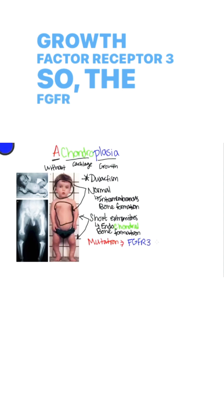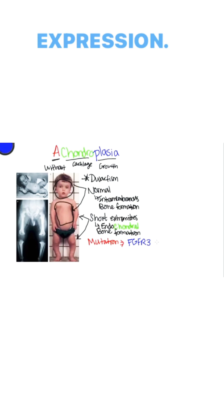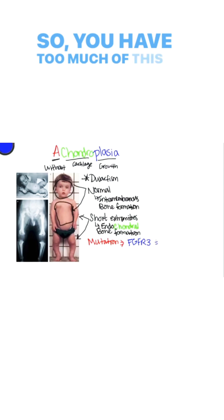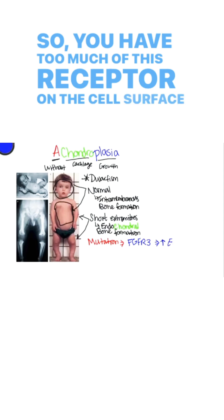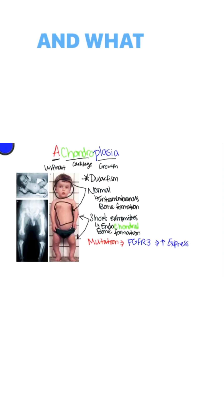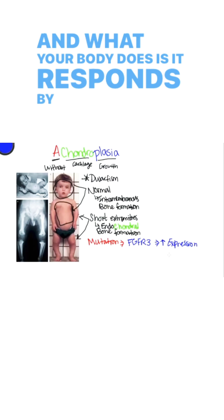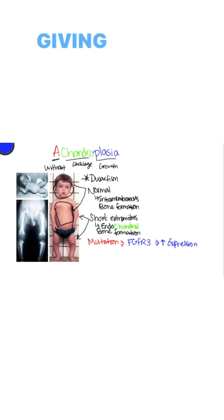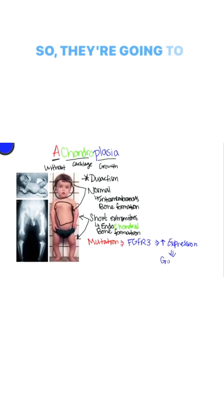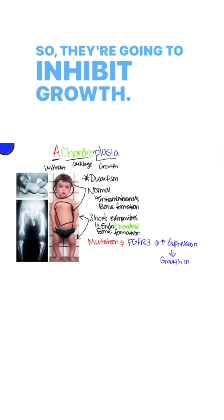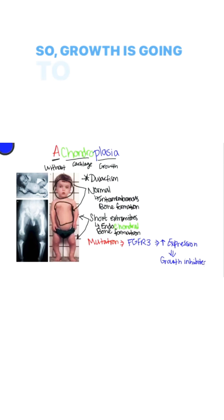The FGFR3 is increased in expression, so you have too much of this receptor on the cell surface. What your body does is respond by saying you're getting too much of a growth signal, so it is going to inhibit growth.